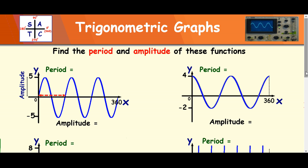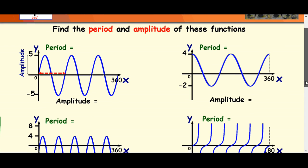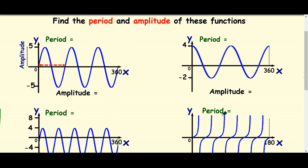Okay, let's look at four examples. Find the period and amplitude of these functions. So the first thing I'm going to do here is I'm going to look at this and work out the period. I've got to try and find out how many waves there are in 360. So 1, 2, 3 waves in 360.